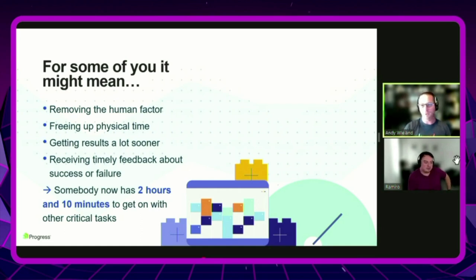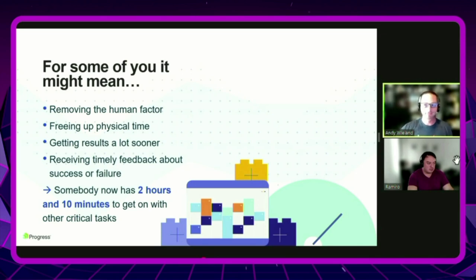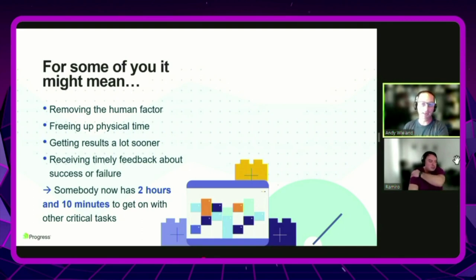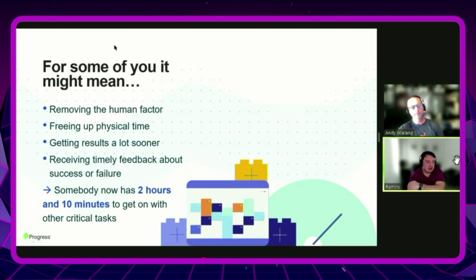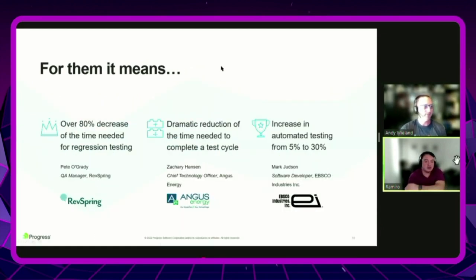There's the QA catch-22: when you spend eight hours manually proving something works, there's a pit in your stomach realizing you just spent all that time proving something passes. If you flip the script and have automation in place, you come in focusing on what's already broken — is it a test issue, an application issue, a bug? Do you need to send that feedback loop to the development team? Customer results show 80% decrease in time needed for regression testing and dramatic reductions in test cycle time.